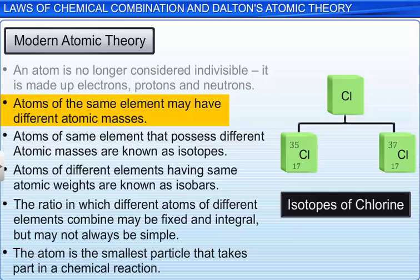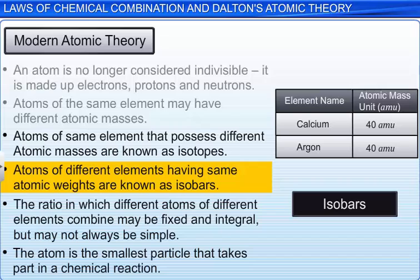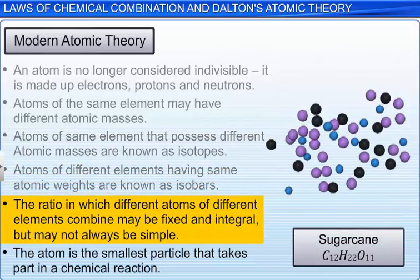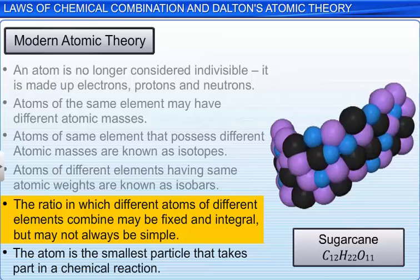For example, a chlorine atom may have an atomic mass of 35 and 37. Atoms of different elements may have same atomic masses. Such atoms are known as isobars. For example, a calcium atom and an argon atom have the same atomic mass, that is 40. From this, we can also conclude that atoms of different elements may be identical in one or more aspects.